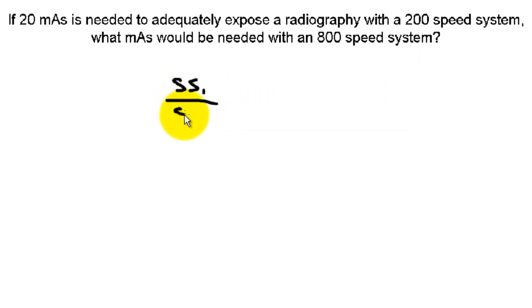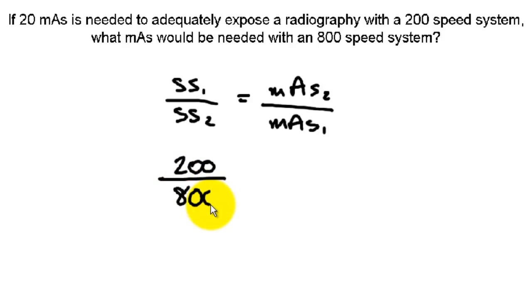Screen speed 1 over screen speed 2 equals mAs 2 over mAs 1. They're inversely proportional. Okay, so screen speed 1 was 200, screen speed 2, 800 equals mAs 2 we're looking for, and mAs 1 was 20. So we can reduce this to 1 fourth.